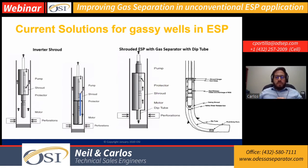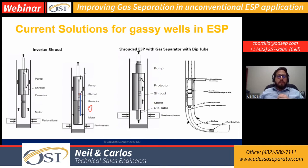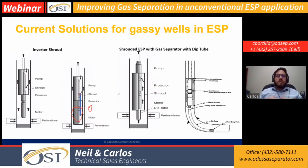Another inverted shroud design isolates the entire ESP assembly. In this case, the intake is positioned such that fluid flows upward and then downward, but the fluid movement around the motor is not as significant as it should be, so heat transfer between the fluid and the motor could be affected. Sand could also fall into that section, so care is needed with this application.